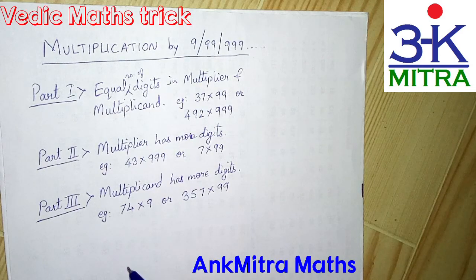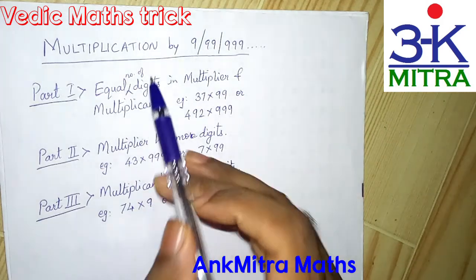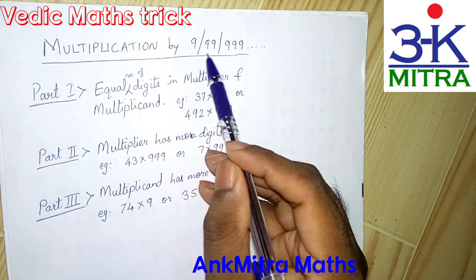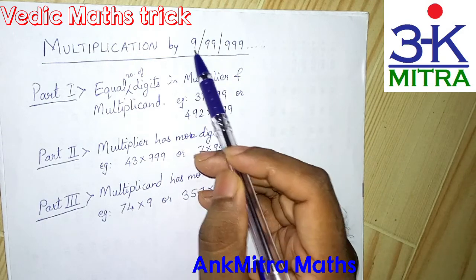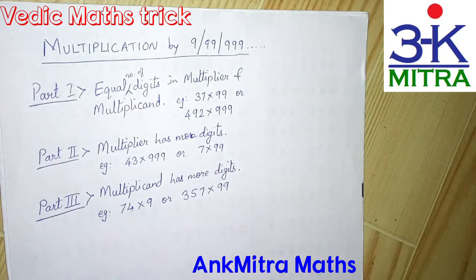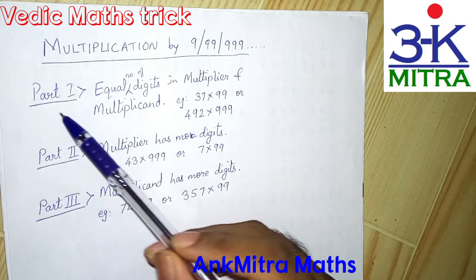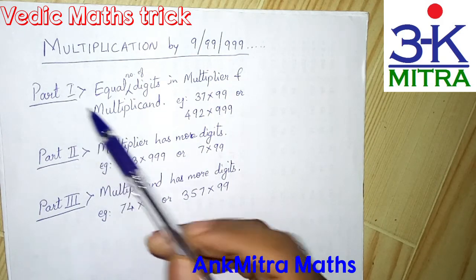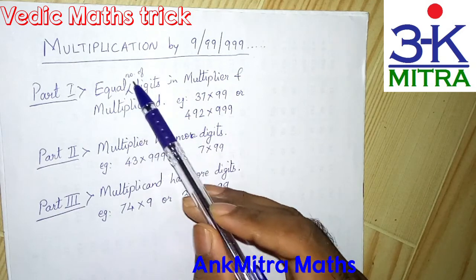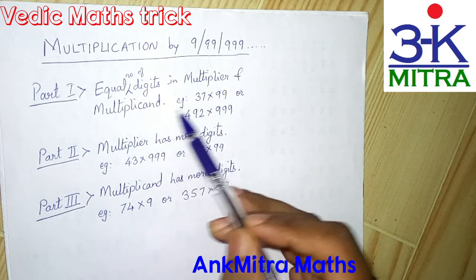Hello everyone. In this video I will be showing you a Vedic maths method or trick for multiplication by 9, or 99, or 999, and so on — any number of nines. I have divided this total procedure into three parts. In part one, that is in this particular video, I will be focusing on where we have equal number of digits in the multiplier and the multiplicand.